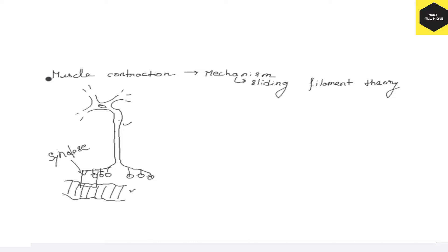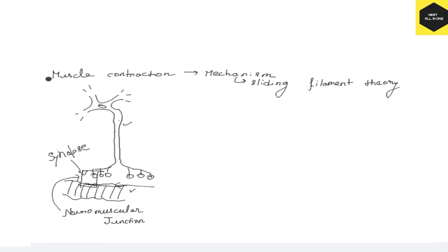This junction between the motor neuron and the sarcolemma of the muscle fiber is called the neuromuscular junction. A neural signal reaching this junction releases the neurotransmitter acetylcholine, which will generate an action potential in the sarcolemma. Sarcolemma means nothing but the plasma membrane of the muscle fiber.